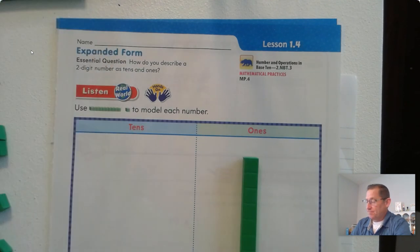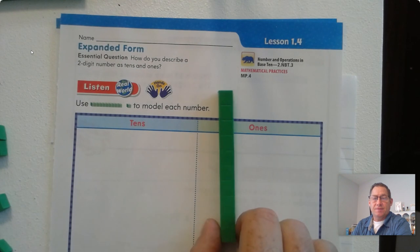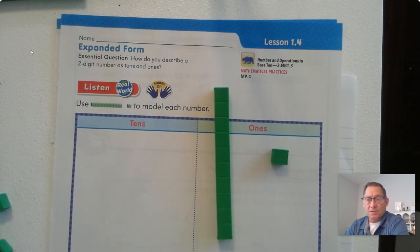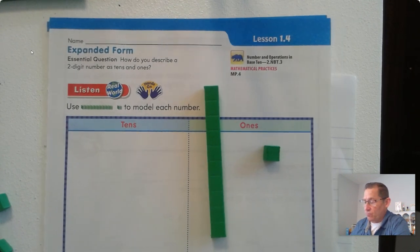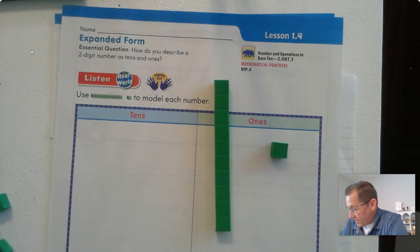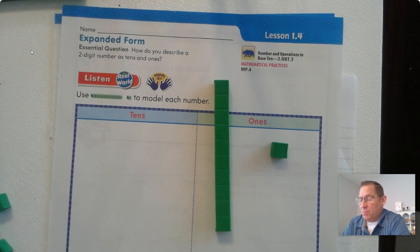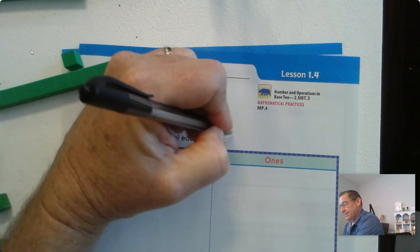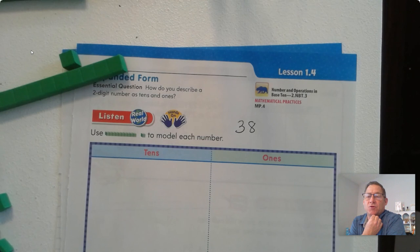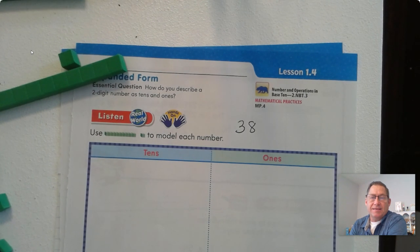So we're going to use blocks. This is a 10-block or 10-rod, and we're going to need some ones to model different numbers. For instance, let's say Emmanuel puts 38 stickers on his paper. How can you model 38 with blocks? So go ahead and pause the video and set up your blocks to show the 38.